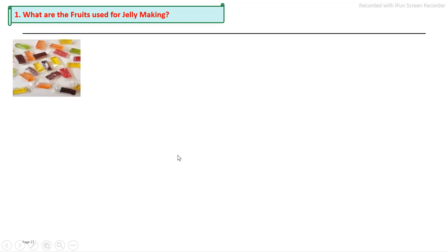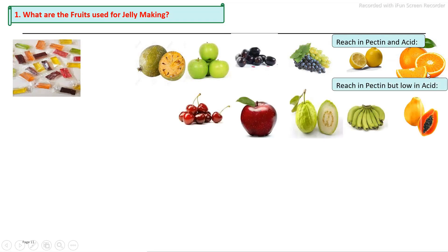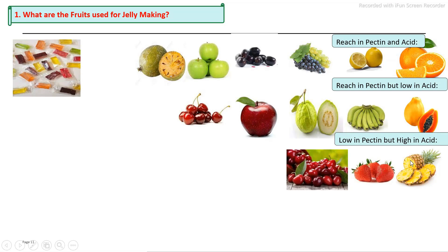Jelly is a product made from fruit extract juice. Initially, selection of fruits is very important based on their pectin and acidity levels. Fruits are categorized into four groups: first, rich in pectin and acid; second, rich in pectin but low in acidity; third, low in pectin but high in acidity; and fourth, low in both pectin and acid — where pectin and acid are added externally.